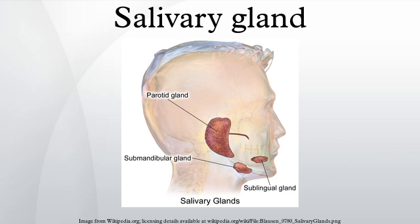Note that both parasympathetic and sympathetic stimuli result in an increase in salivary gland secretions. The sympathetic nervous system also affects salivary gland secretions indirectly by innervating the blood vessels that supply the glands.